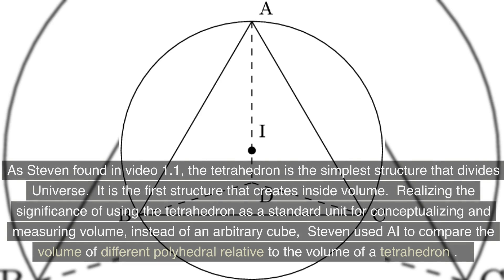As Stephen found in video 1.1, the tetrahedron is the simplest structure that divides universe. It is the first structure that creates inside volume.